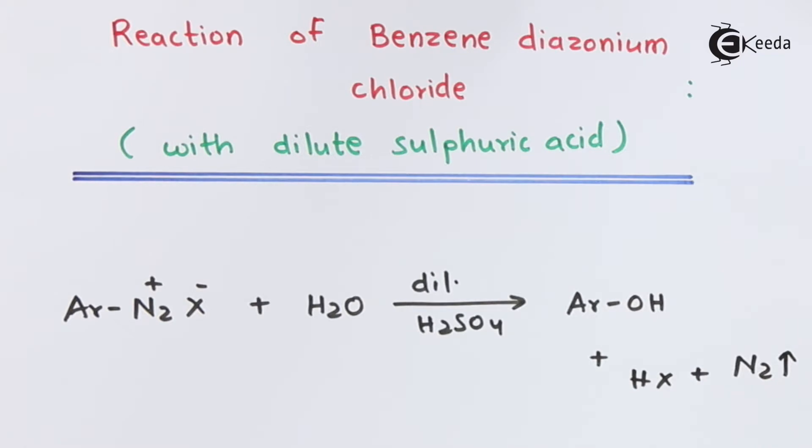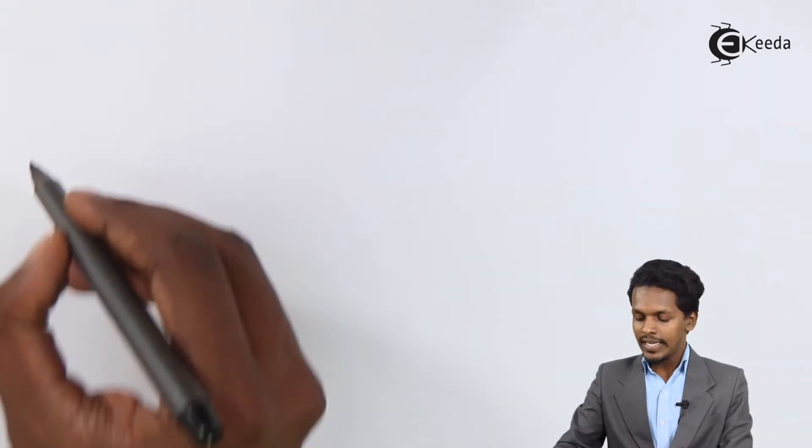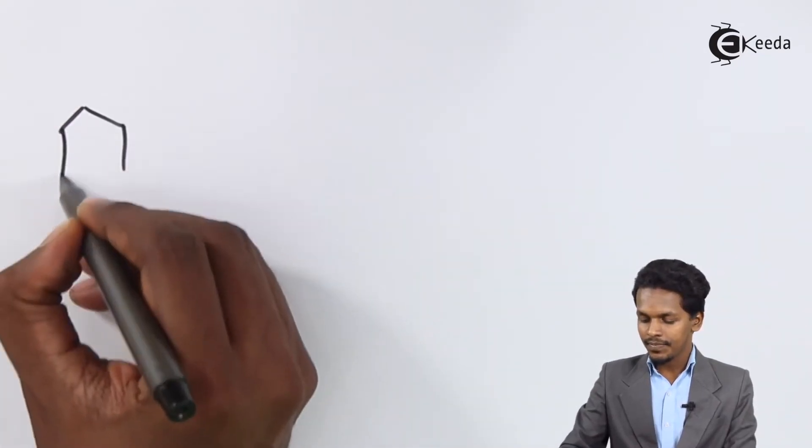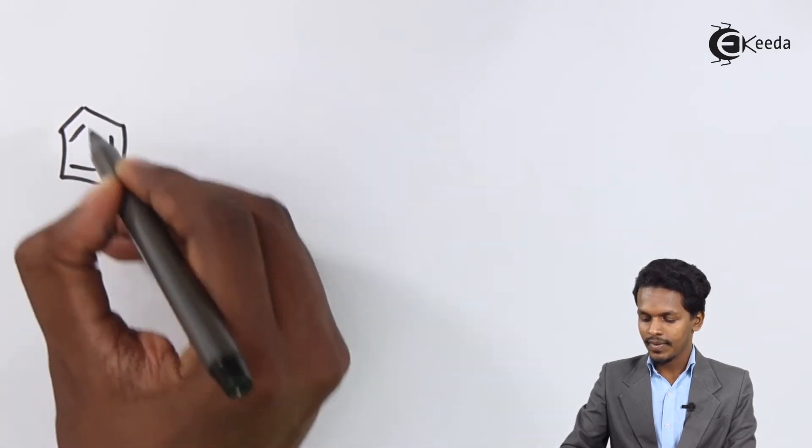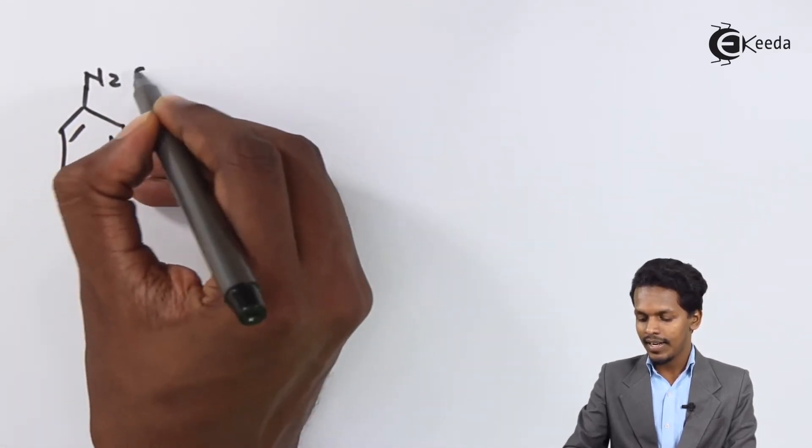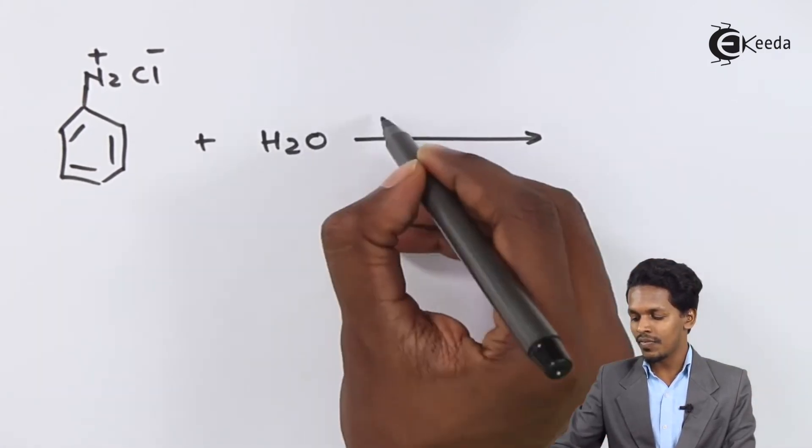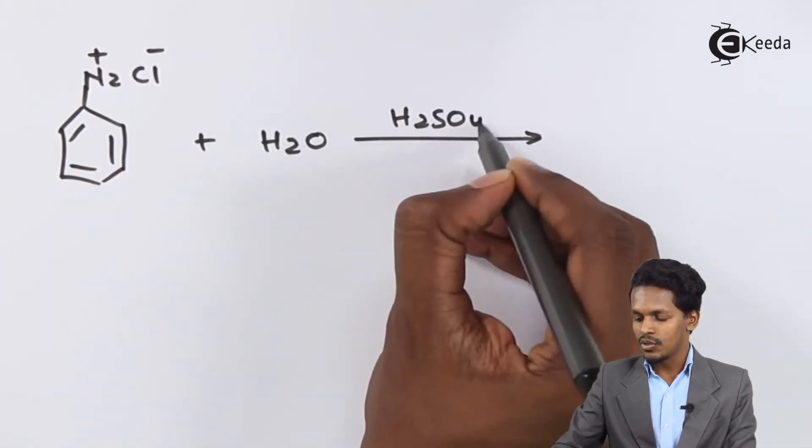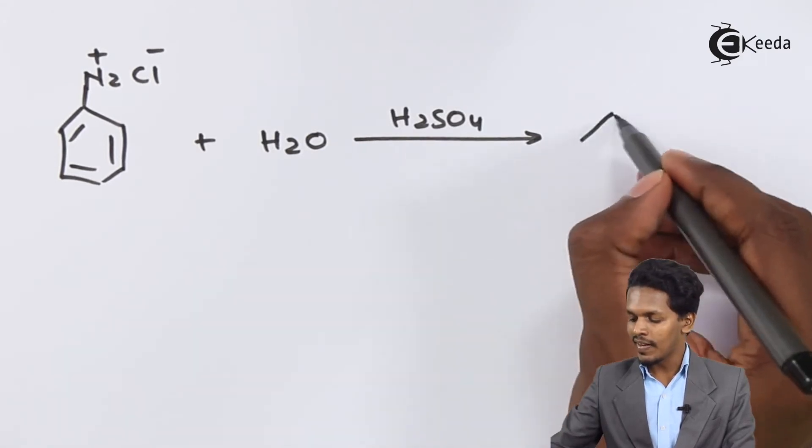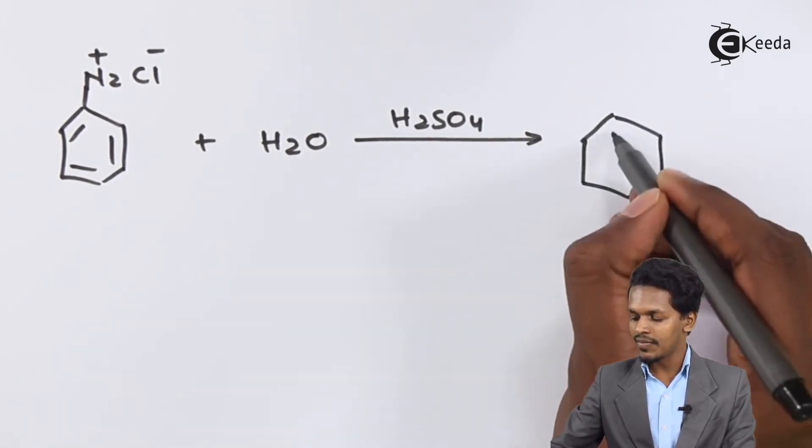Let me give you an example. Suppose I'm considering benzene diazonium chloride, and I have to treat it with H2O in the presence of sulfuric acid. The reaction will proceed such that we get the main product as phenol.